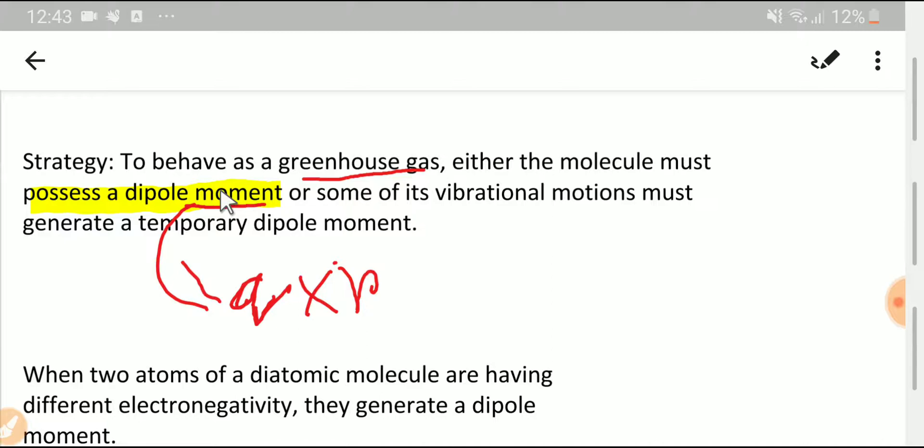Or some of its vibrational motion must generate a temporary dipole moment. On the other hand, carbon dioxide is a linear molecule and its net dipole moment is zero. But due to bending vibration of carbon dioxide, we get change in dipole moment. That is why carbon dioxide is IR active or a greenhouse gas.